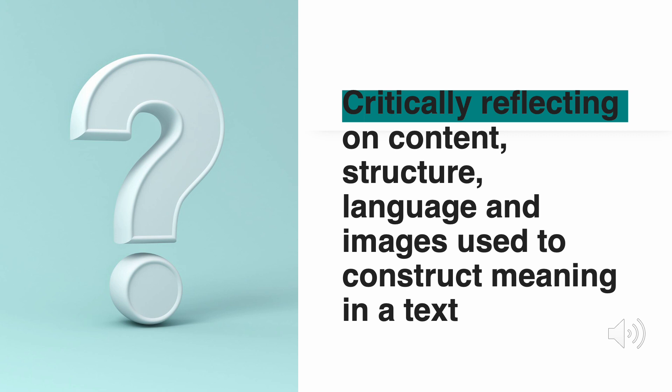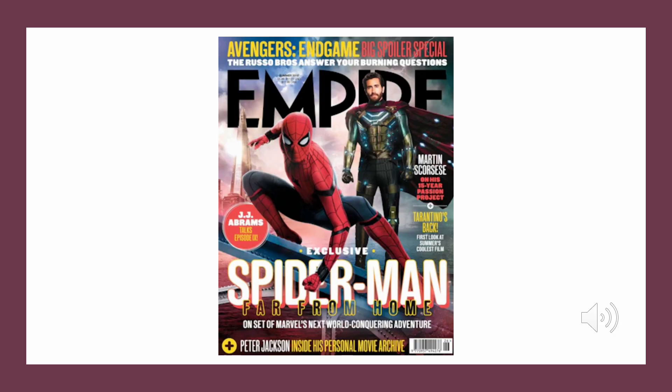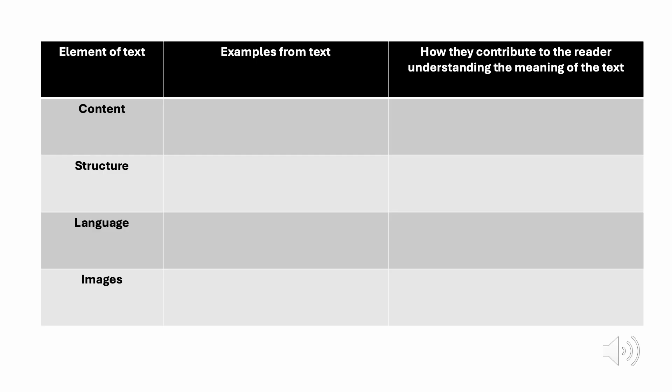The final comprehension strategy in the Australian Curriculum is critically reflecting on content, structure, language and images used to construct meaning in a text. The teacher and the students might collaboratively engage with an article from a magazine. The students and teacher then identify examples from the text for each of the four elements — content, structure, language and images — talk about how they contribute to the reader understanding the meaning of the text, and then populate the scaffold.